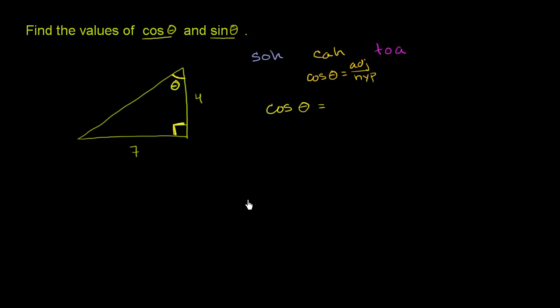So in our example here, what is the adjacent side? Well, if we look at it, it's the side that's next to it that is not the hypotenuse. This side is next to it, and it's not the hypotenuse. This side up here is next to our angle, but it is the hypotenuse. It's the one that's opposite the right angle. So this is the hypotenuse up here.